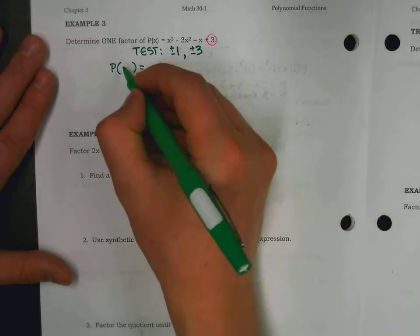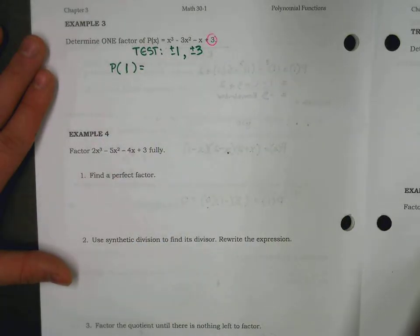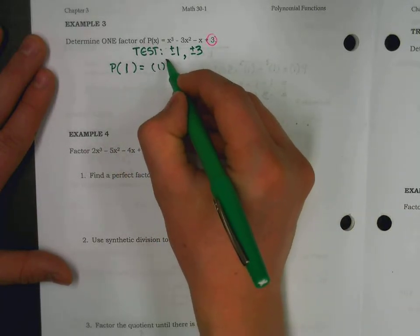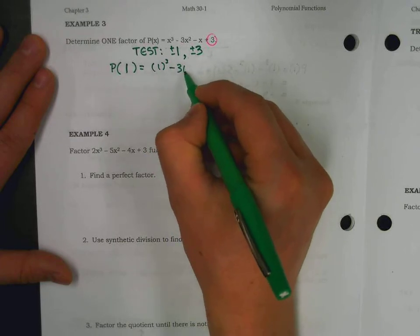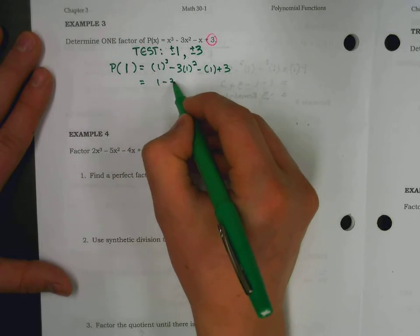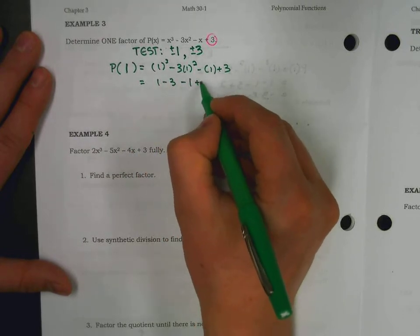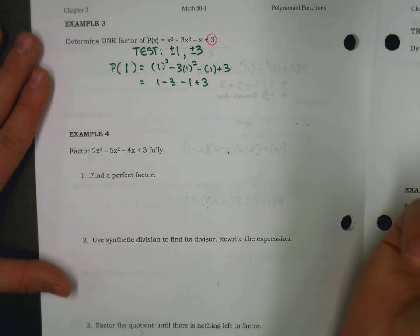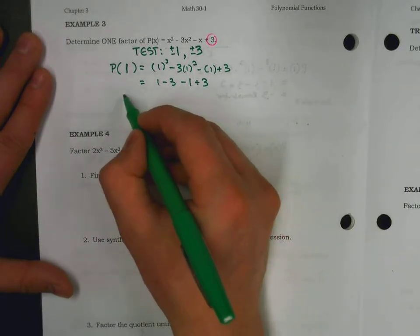So, I sometimes will just try one and cross my fingers hoping for a zero to come out, because one's a pretty easy number to plug in. What we have is one cubed minus three times one squared minus one plus three. Fingers crossed. One minus three minus one plus three. Those are all sort of opposites of each other, positives and negatives, and they do, in fact, cancel out.